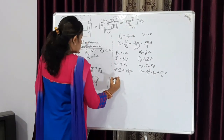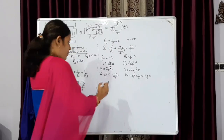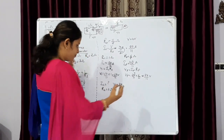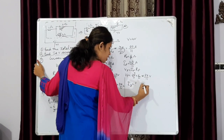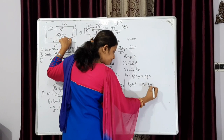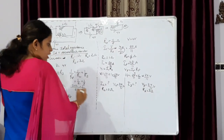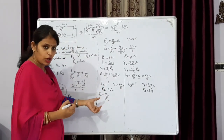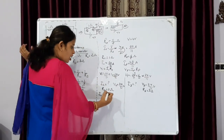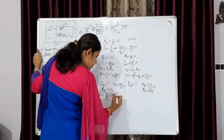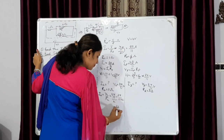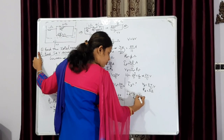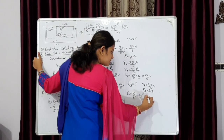Now we find the current through each parallel branch. For I2: V2 = 24/11 volt, R2 = 2 ohm, so I2 = V2/R2 = (24/11) ÷ 2 = 12/11 ampere. For I3: V3 = 24/11 volt, R3 = 3 ohm, so I3 = V3/R3 = (24/11) ÷ 3 = 8/11 ampere. We only have to rearrange Ohm's law to get the values of V and I in such questions.